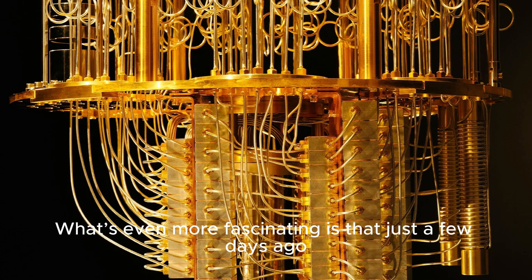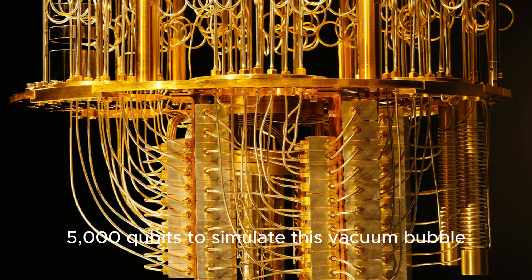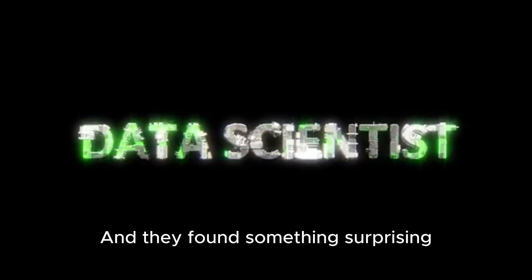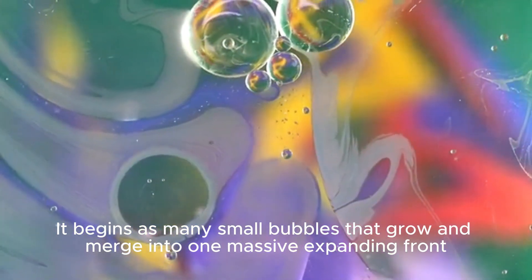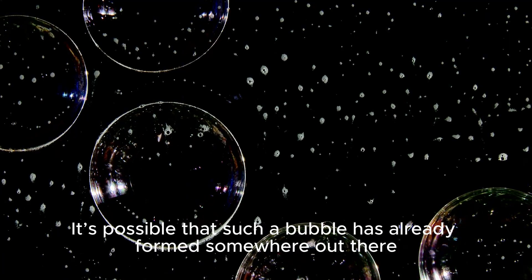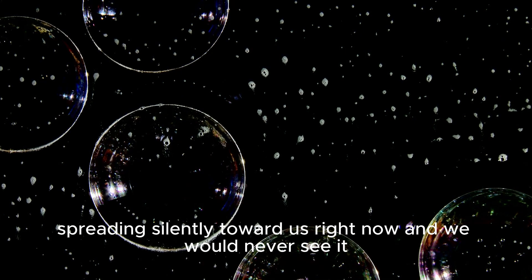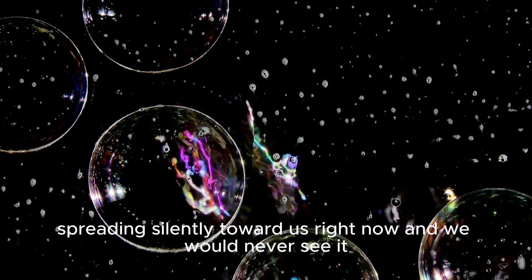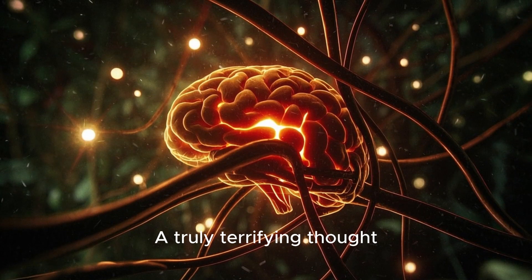What's even more fascinating is that just a few days ago, scientists in Germany used a quantum computer with over 5,000 qubits to simulate this vacuum bubble. And they found something surprising - the bubble doesn't travel alone. It begins as many small bubbles that grow and merge into one massive expanding front. It's possible that such a bubble has already formed somewhere out there, spreading silently toward us right now. And we would never see it because it's invisible and moves at the speed of light. A truly terrifying thought.